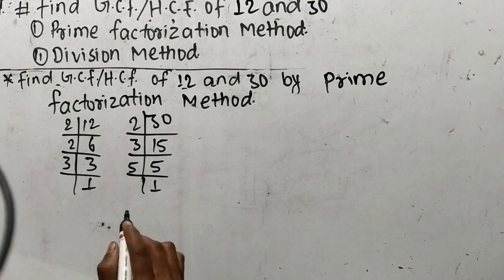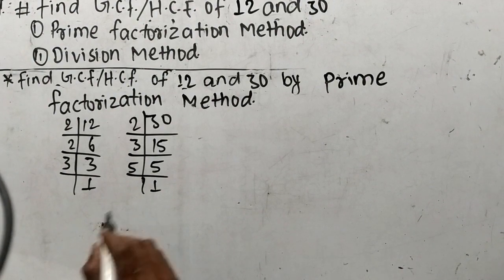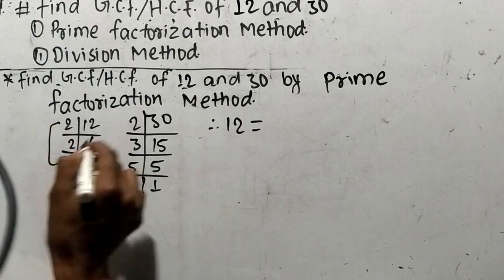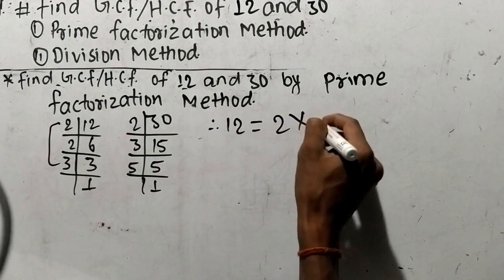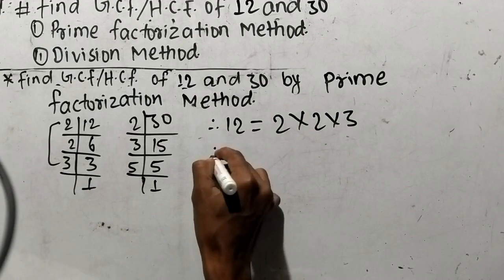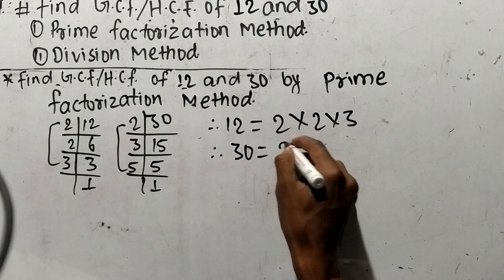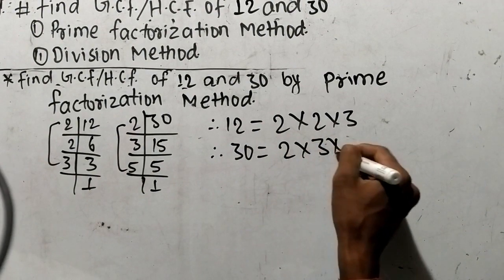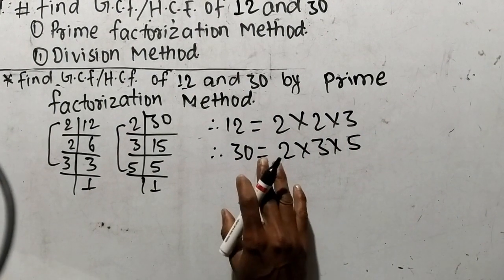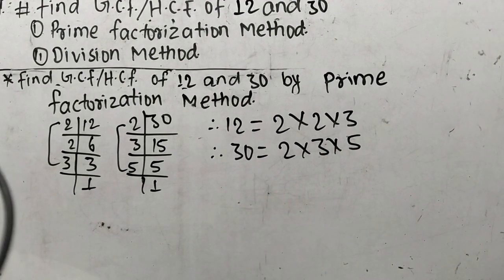As you look here, we have found out the prime factors of 12 and 30. From these prime factors, we can write 12 is equal to 2 times 2 times 3. In the same way, we can write 30 is equal to 2 times 3 times 5. As you look here, we have written the prime factors of 12 and 30.